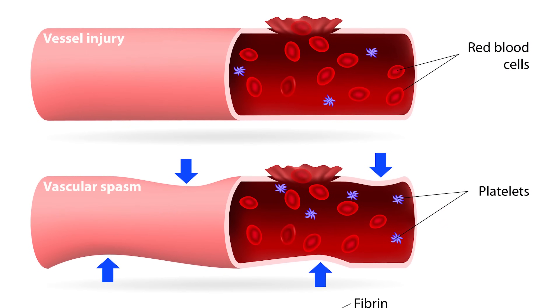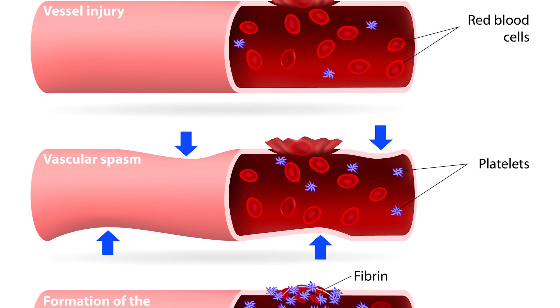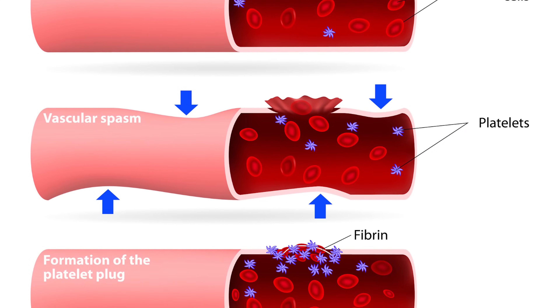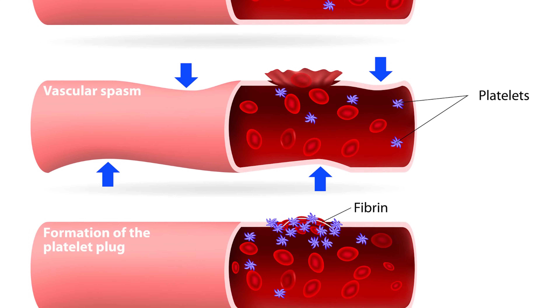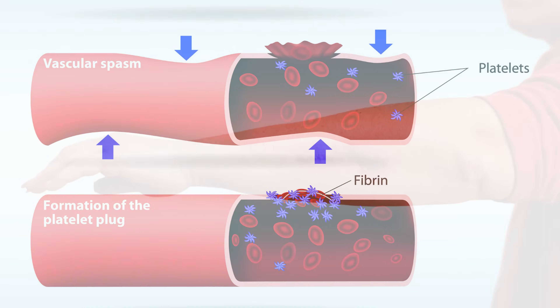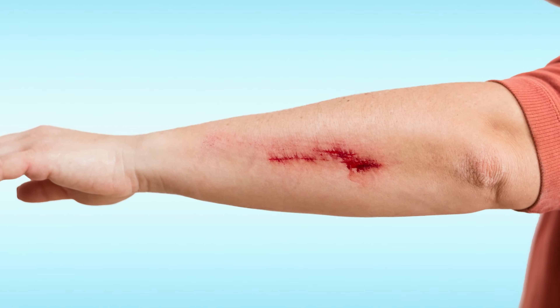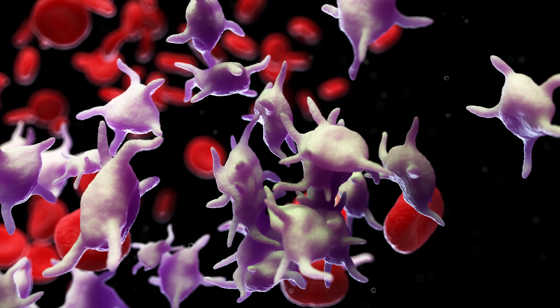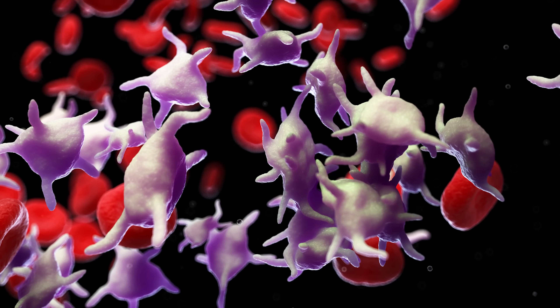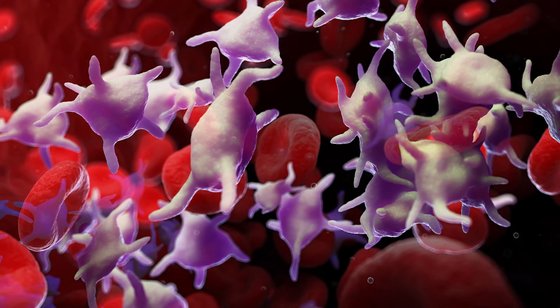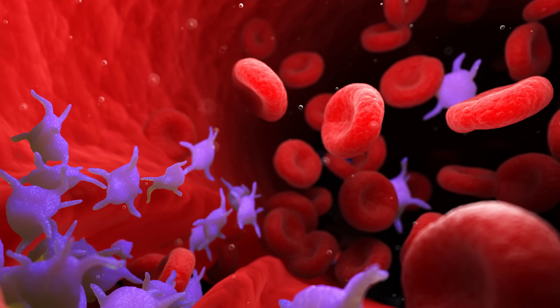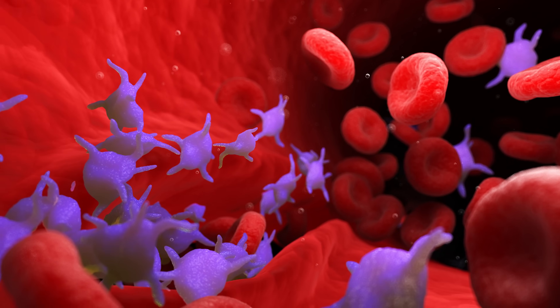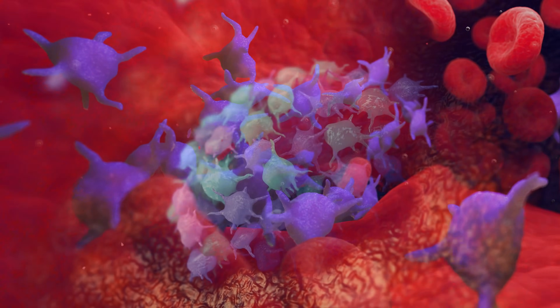Blood clots can happen in a good way or a bad way. The good way is what's called hemostasis — your body's natural process trying to stop bleeding from occurring. So let's say you get cut in the arm. When you cut through the blood vessel and blood starts spraying everywhere, that's obviously a problem. What happens is those platelets are naturally circulating in your bloodstream, and they run into that injury and get stuck to the wall, which actually causes them to become activated.